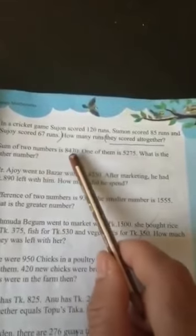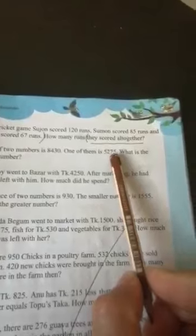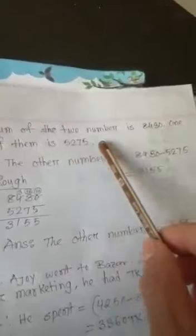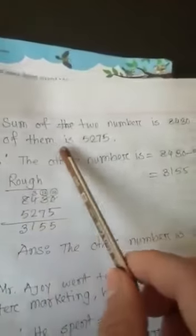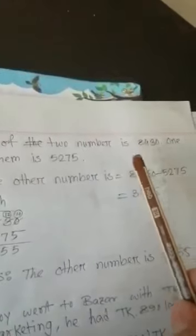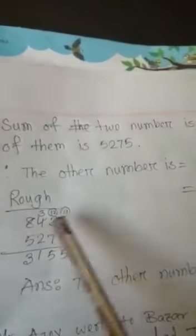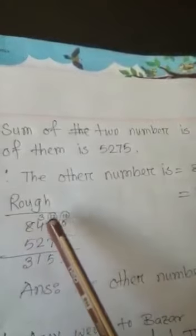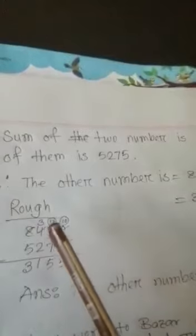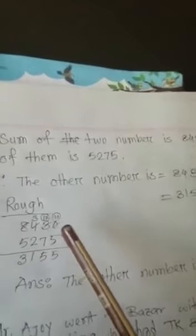We will find the other number by doing subtraction. First, write the information part: the sum of the two numbers is 8430, and one of them is 5275. So the other number is 8430 minus 5275. Both are four-digit numbers, so write them each in four boxes in your math notebook. Do the subtraction properly and you will get the answer: the other number is 3155.